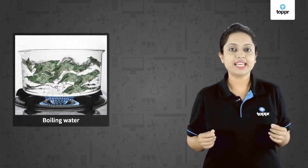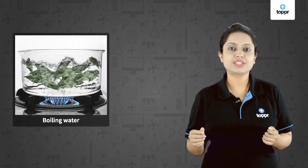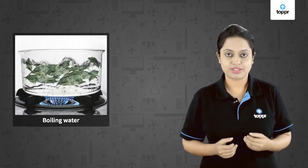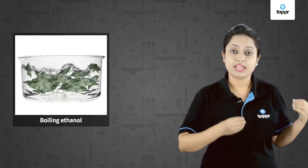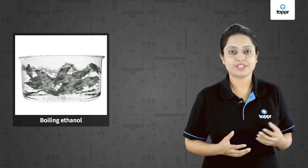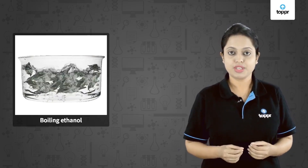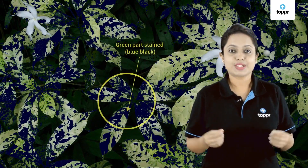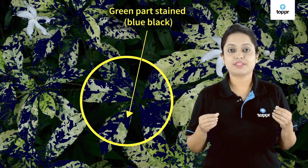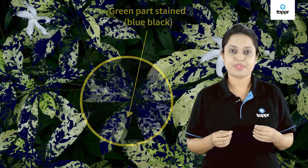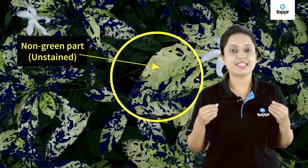Now boil this variegated leaf in water for 40 to 60 seconds — this will stop all the ongoing chemical reactions. Then dip this leaf in boiling ethanol for some time, which will remove all the color from the leaf. Then wash the leaf with water and put iodine solution over it. You will see that all the green parts are stained blue-black as they contain starch, while the non-green parts are left unstained.